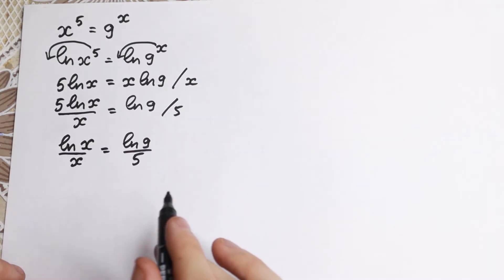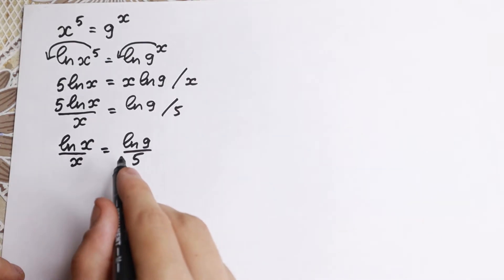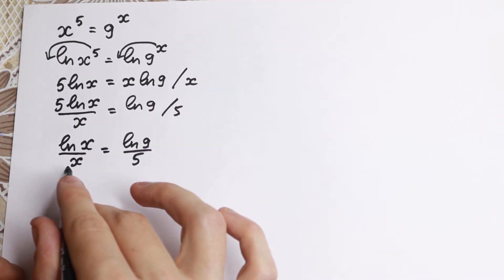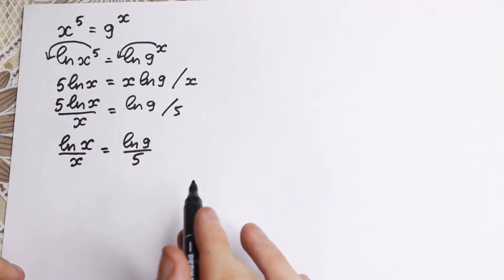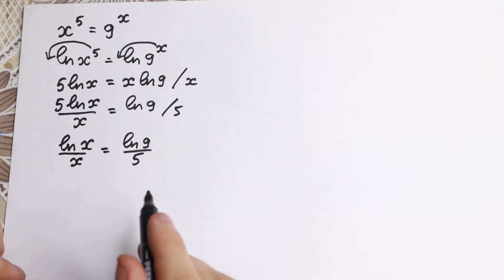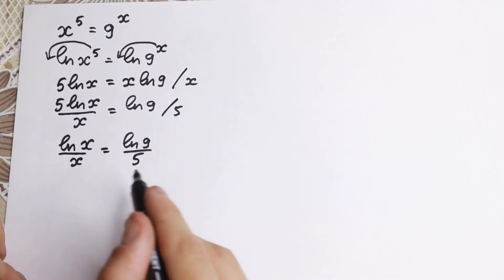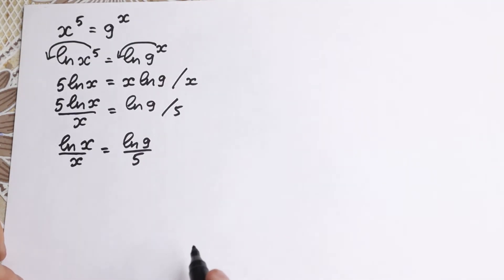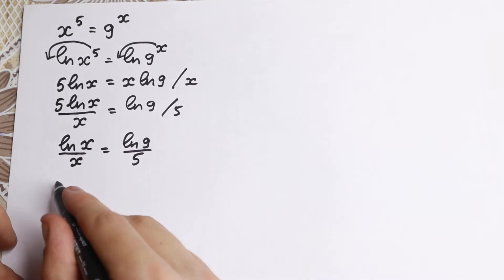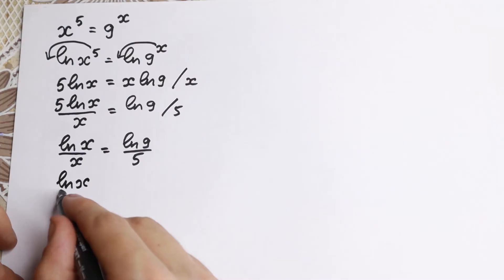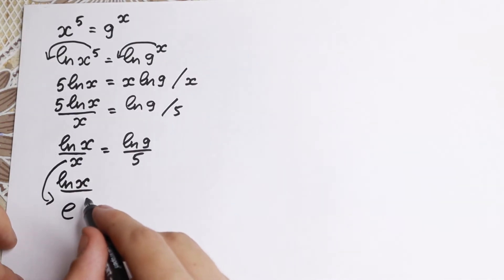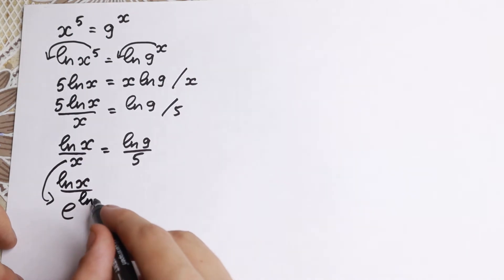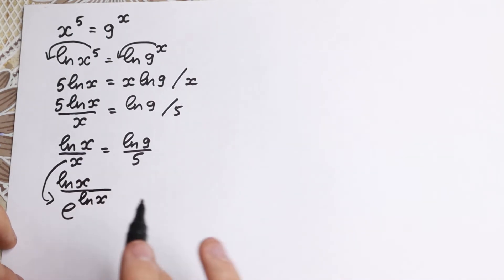It looks like we can find our root by inspection, but it's not our case because we need to solve it using the Lambert W function — it's not possible to solve by inspection. We need to know a little about the Lambert W function. First of all, let's write x in the denominator as e to the power of natural log x.